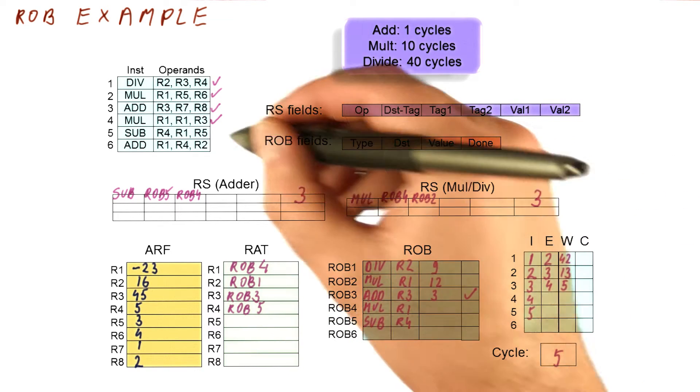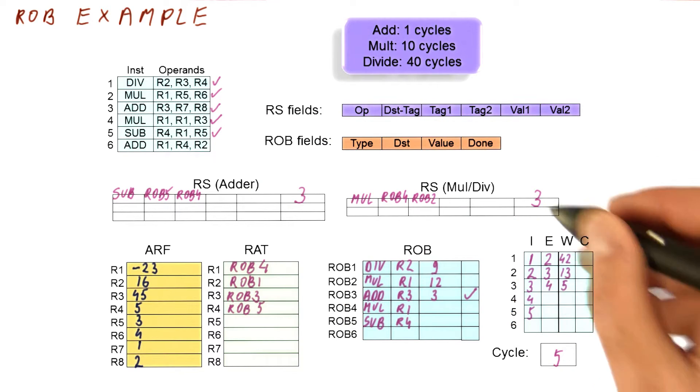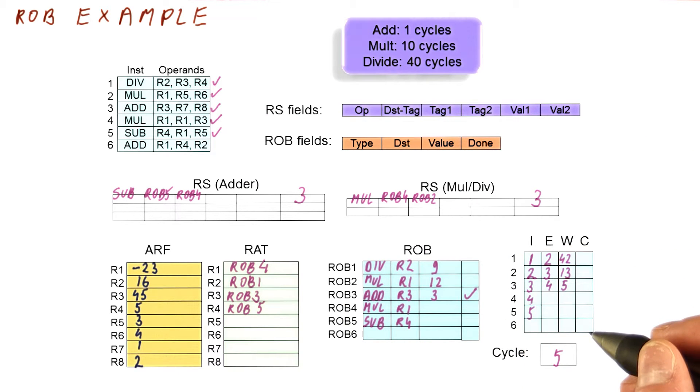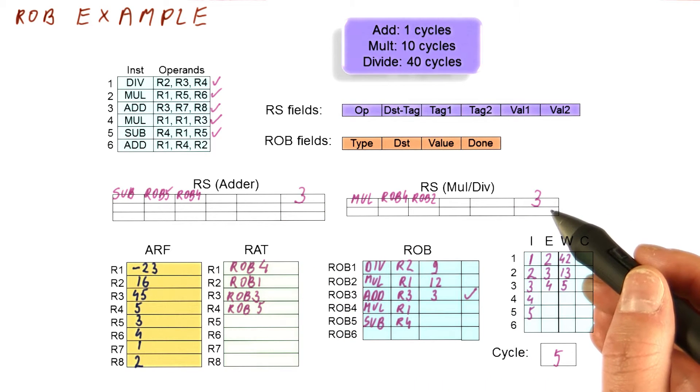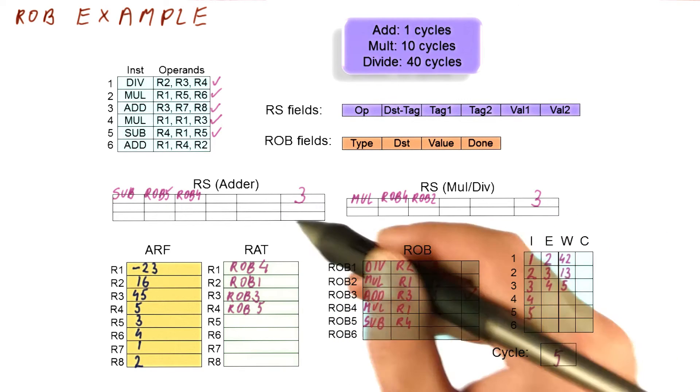So now in cycle five, we have finished our issuing here. We have broadcast the result. We are ready to move on to cycle six. Neither of these instructions is ready to actually dispatch in cycle five, so nothing will begin executing in cycle six because both of them still wait for something else.